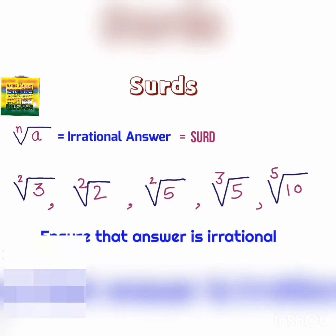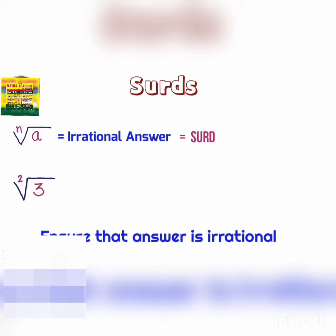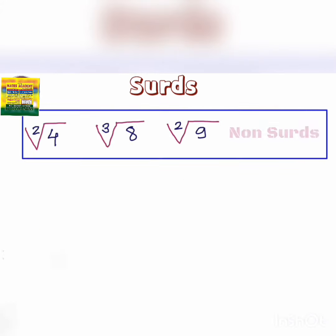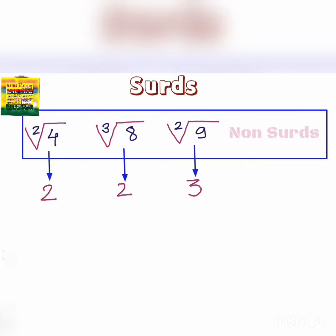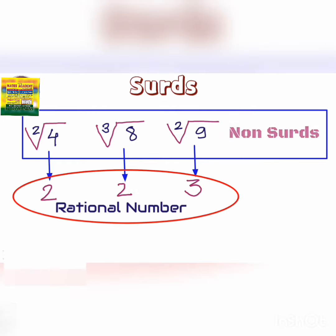We have to only ensure that the answer has to be irrational. Remember, square root of 4, cube root of 8, and square root of 9 are not surds because they give a result as a rational number. Square root of 4 is 2, cube root of 8 is also 2, and square root of 9 is equal to 3 — the result is a rational number.